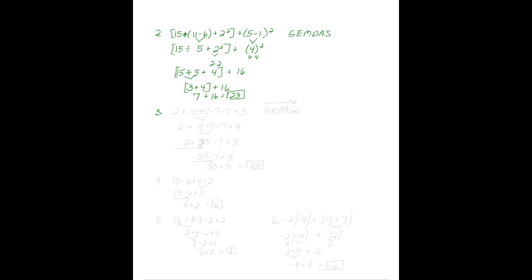Example number 3: 2 plus 10 divided by 2 times 7 minus 7 plus 3.